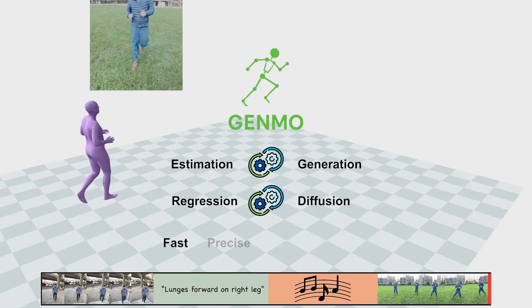Genmo enables fast, precise, diverse, and controllable human motion synthesis across multiple modalities. Here are some example results.